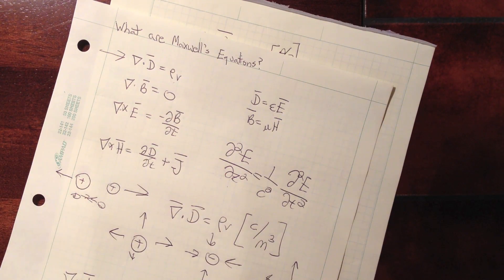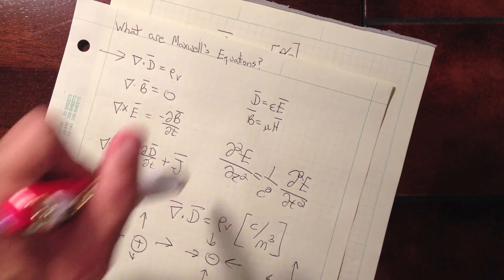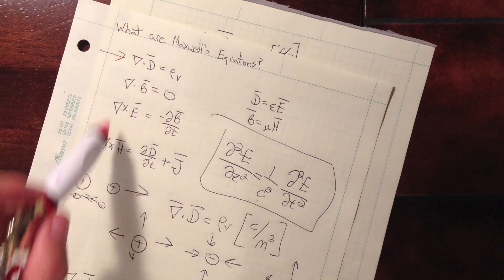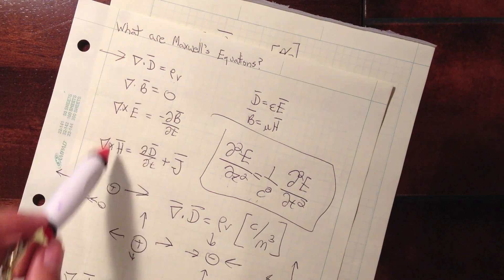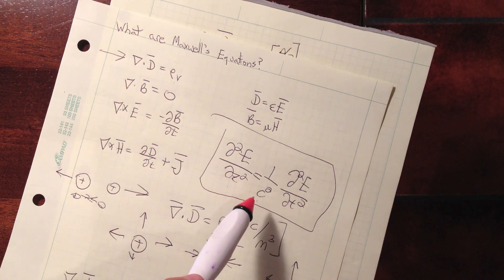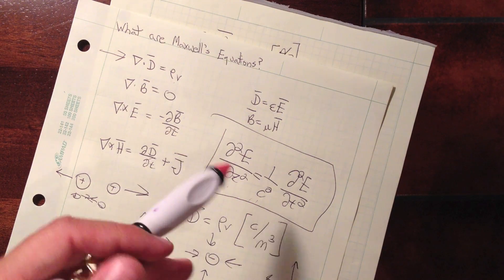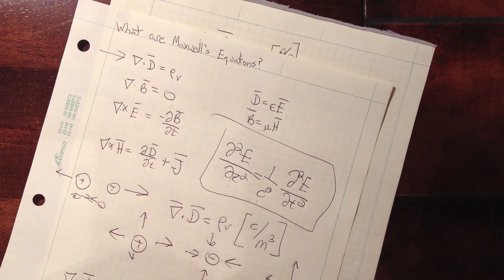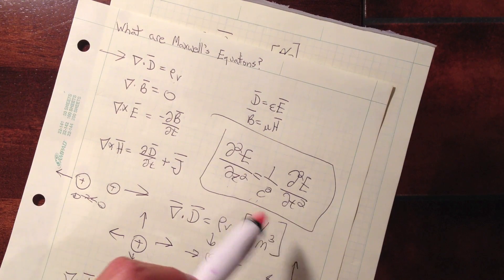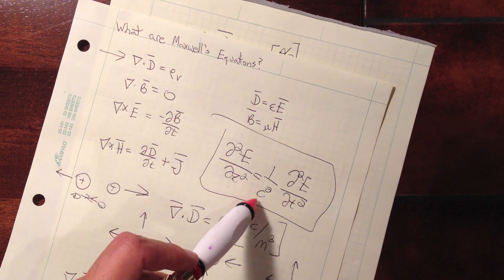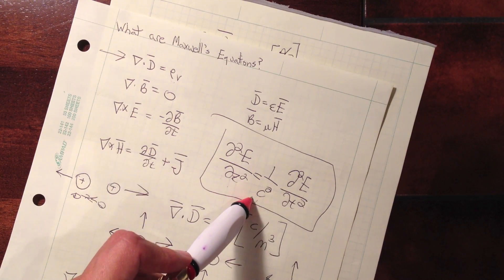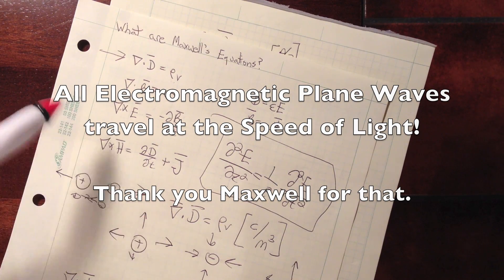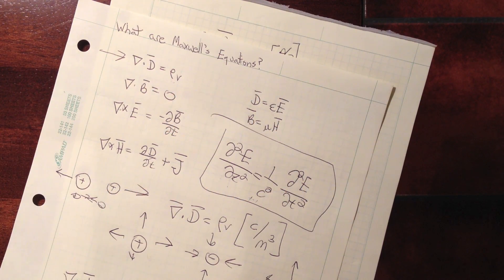One of the big things about Maxwell's equations is that the wave equation is derived directly from them, and these are all experimental results. This says that any shape of electric field can travel through space, and furthermore, no matter what frequency or shape it is, they all travel at c — the speed of light. That is one of the big consequences of Maxwell's equations.